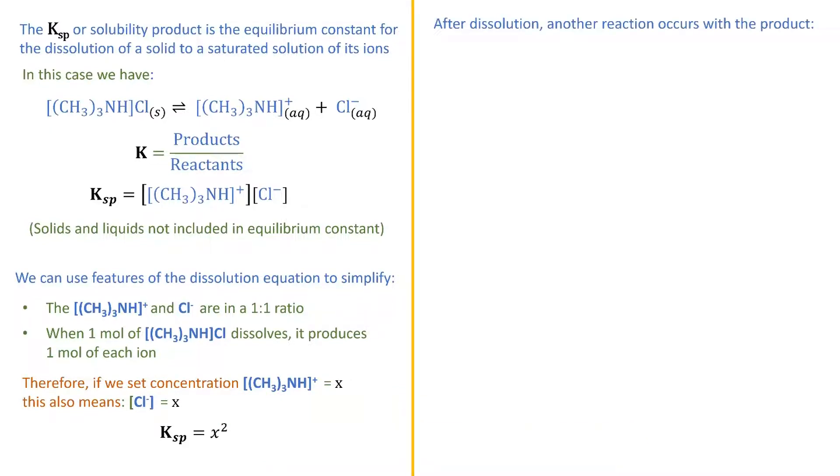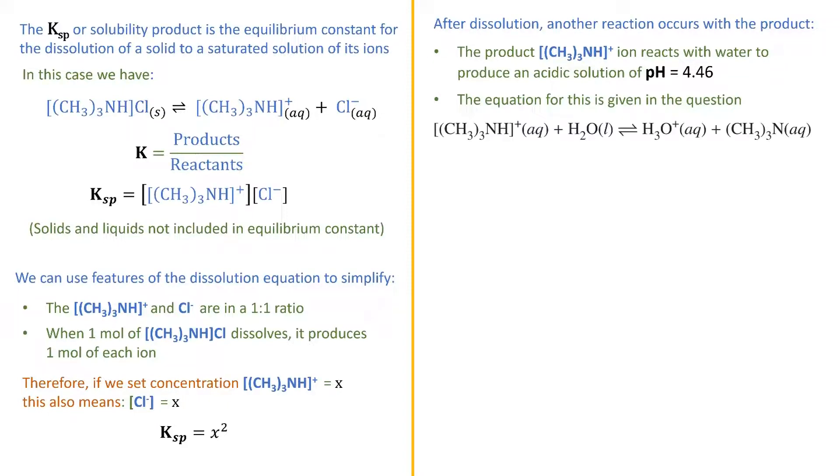After the salt has dissolved, another reaction occurs with one of the products. Specifically, the trimethylammonium ion reacts with water, producing an excess of hydronium ions, and therefore an acidic solution of pH equal to 4.46. The equation for this was given in the question itself, as we see here. Just as before, we can write the equilibrium constant for this reversible reaction, which in this case is the acid dissociation constant, Ka.